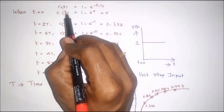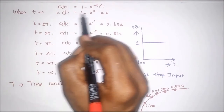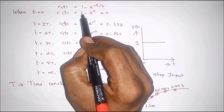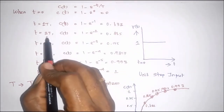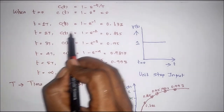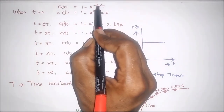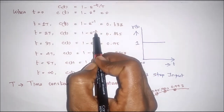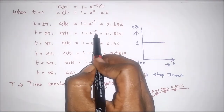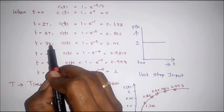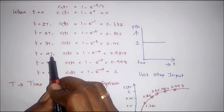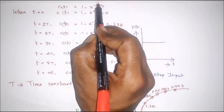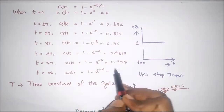We substitute each time value into C(t) equal to 1 minus e to the power minus t by T. At t equal to 0, e to the power 0 equals 1, so C(t) equals 1 minus 1 equals 0. At t equal to 2T, both T values cancel and we get e to the power minus 2. Similarly for t equal to 3T, 4T, 5T, and infinity, we substitute into the expression to get the different response values.